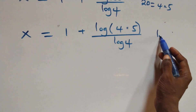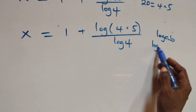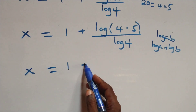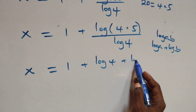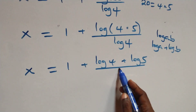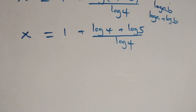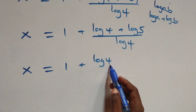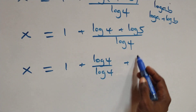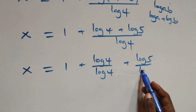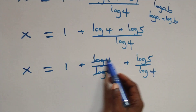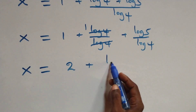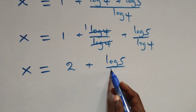We also apply the product rule to log 20, writing it as log(4 times 5) equals log 4 plus log 5. So x becomes 1 plus log 4 over log 4 plus log 5 over log 4. Since log 4 over log 4 equals 1, we get x equals 1 plus 1 plus log 5 over log 4, which simplifies to x equals 2 plus log 5 over log 4.